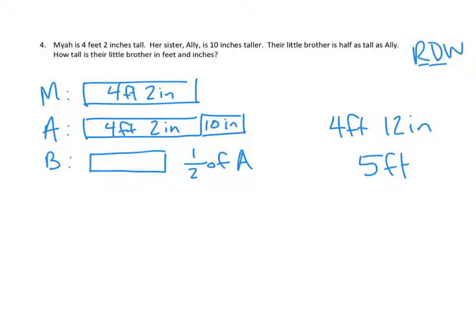Now, why don't we solve for Allie? Now we can figure out the little brother, right? The little brother is half as tall as Allie, so basically half of five feet, so two and a half feet, but wait, they want it in feet and inches, so two and a half feet.